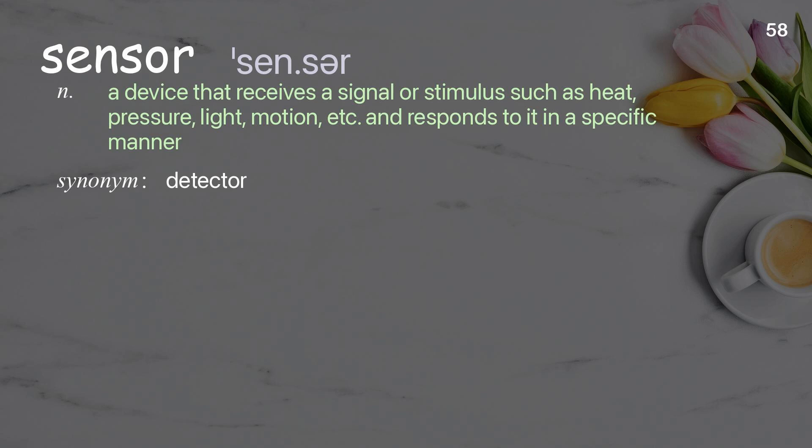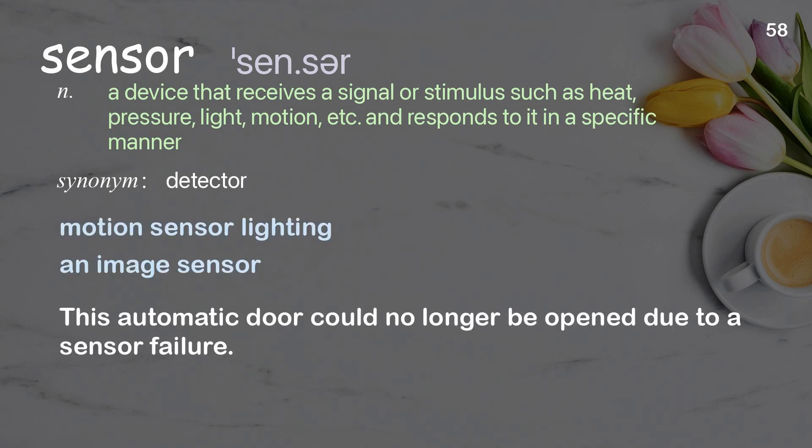Sensor: a device that receives a signal or stimulus such as heat, pressure, light, motion, etc., and responds to it in a specific manner. Examples: motion sensor lighting, an image sensor. This automatic door could no longer be opened due to a sensor failure.